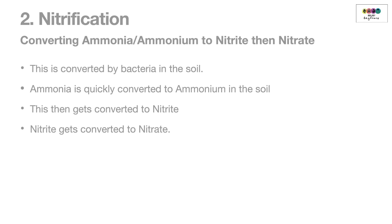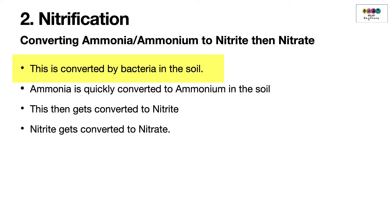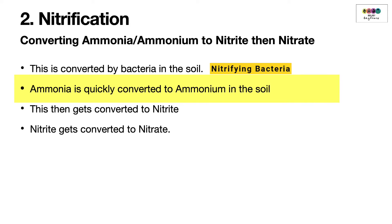Part two of the nitrogen cycle is nitrification — converting ammonia (or ammonium) to nitrite, then to nitrate. This is done by nitrifying bacteria in the soil, which are totally different from the nitrogen-fixing bacteria. Ammonia is quickly converted to ammonium in the soil, and it's the ammonium that gets converted to nitrite and then to nitrate.